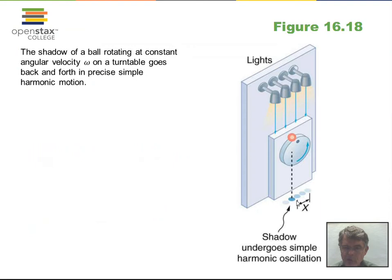The shadow of an object moving in circular motion undergoes simple harmonic motion. It shows an acceleration that is proportional to its displacement from the center (x = 0). So the shadow does show true simple harmonic motion.